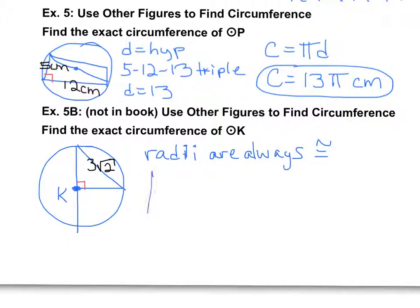If we pull off that triangle diagram, if the radii are congruent, I hope you can see—3 radical 2—that this is a 45-45-90 triangle.